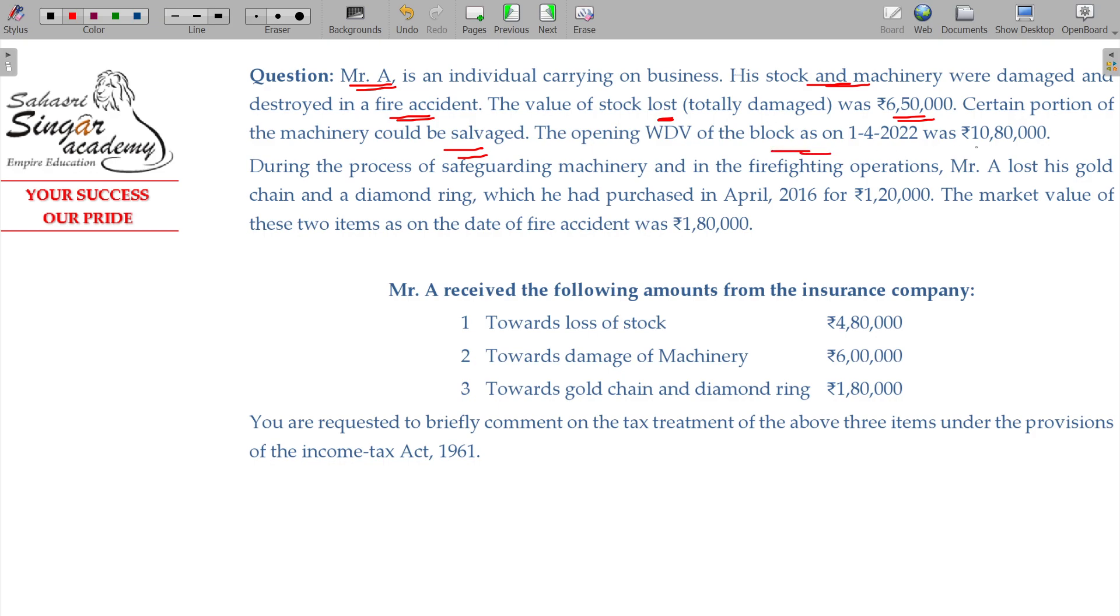The opening WDV of the block being 10 lakhs 80 thousand rupees. During the process of safeguarding machinery and in the fire fighting operations, Mr. A lost his gold chain and diamond ring.